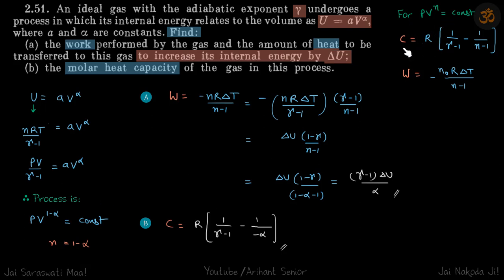We know that for a polytropic process, this is the molar heat capacity and this is the work done. So work done is given by this formula, but we are given delta U and we know delta U is NR delta T upon gamma minus 1. So we just multiply and divide by gamma minus 1 and gamma minus 1 will take inside and this term becomes delta U. This minus 1 will take inside and we'll put the value of N equal to 1 minus alpha and get our answer.